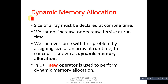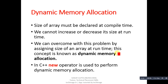Now coming to the topic: dynamic memory allocation. The first requirement is that the size of an array must be declared at compile time. Arrays in C and C++ are declared as static, meaning memory is allocated at compilation time. The problem is we cannot increase or decrease the array size at runtime. To overcome this, we can assign the size of an array at runtime — this concept is known as dynamic memory allocation.